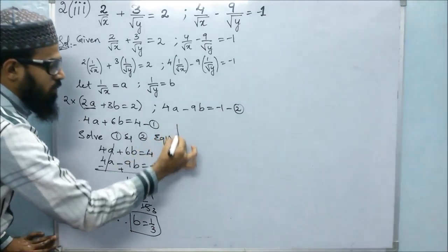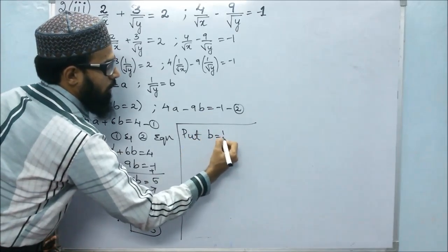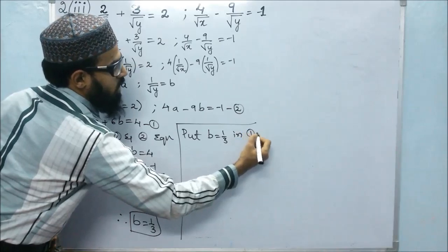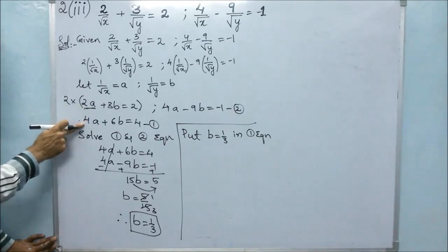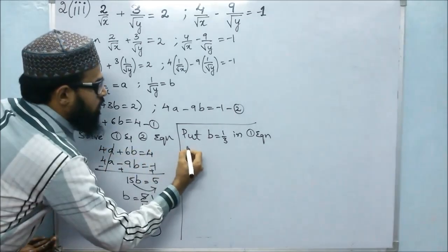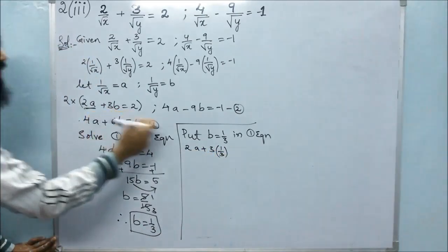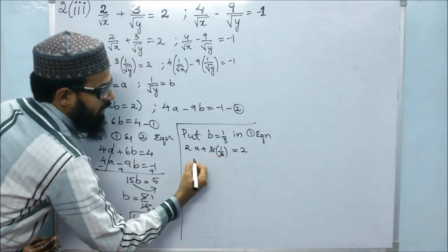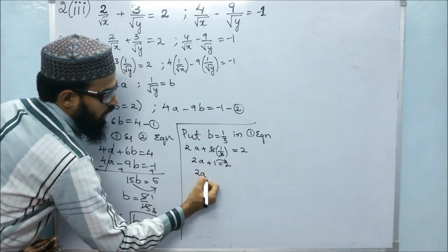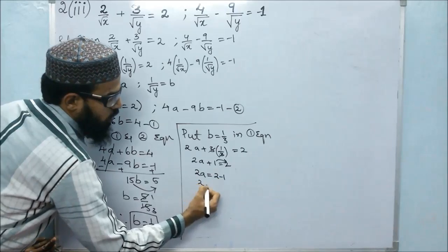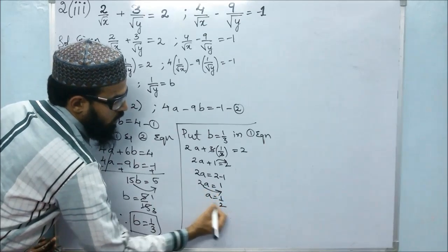For A, we have to substitute this value. Put B equals 1 by 3 in the first equation: 2A plus 3 times 1 by 3 is equals to 2. The 3s cancel, so 2A plus 1 is equals to 2. Therefore 2A is equals to 2 minus 1, which is 1. So A is equals to 1 by 2.